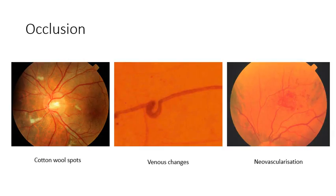Let's now look at the signs of occlusion. Occlusion leads to ischemia, which is reduced oxygen because oxygenated blood is not getting through to the retinal layers. The signs you'll see include cotton wool spots, irregular veins and new vessels, also called neovascularization.